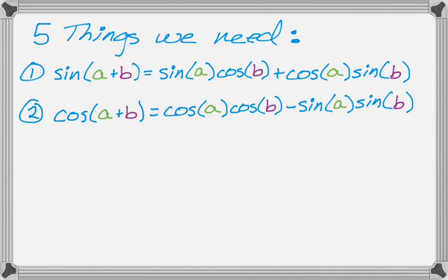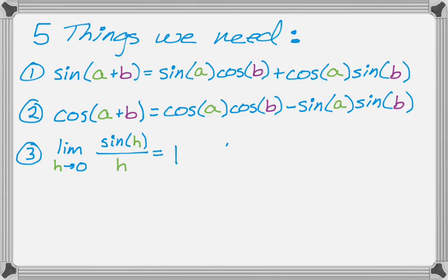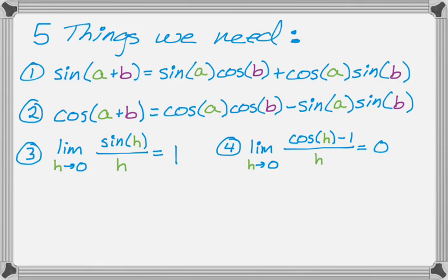There are two important trig limits that we're going to need to know. The first one is that the limit as h approaches 0 of sine of h over h is equal to 1. And then the other one is the limit as h approaches 0 of cosine of h minus 1 over h is equal to 0. If you graph sine of x over x, you'll see that as x approaches 0, you're getting 1. And similarly, if you graph cosine of x minus 1 all over x, as x approaches 0, you get 0.